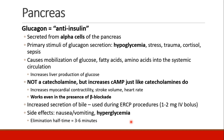Glucagon is not a catecholamine, but it acts like one because it increases cyclic AMP. As a result, glucagon will increase myocardial contractility, stroke volume, and heart rate, and can actually work even in the presence of significant beta blockade. Glucagon leads to bile secretion and may be used during the ERCP procedure as a 1 to 2 milligram IV bolus. Side effects include nausea and vomiting and hyperglycemia, and it has a short elimination half-time of 3 to 6 minutes.